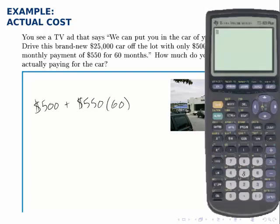Now this is a pretty straightforward calculation. $500 plus $550 times 60 gives you that you've paid a total of $33,500 for this car.